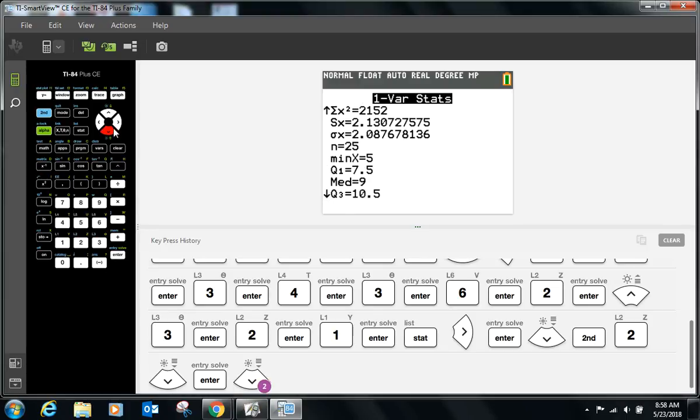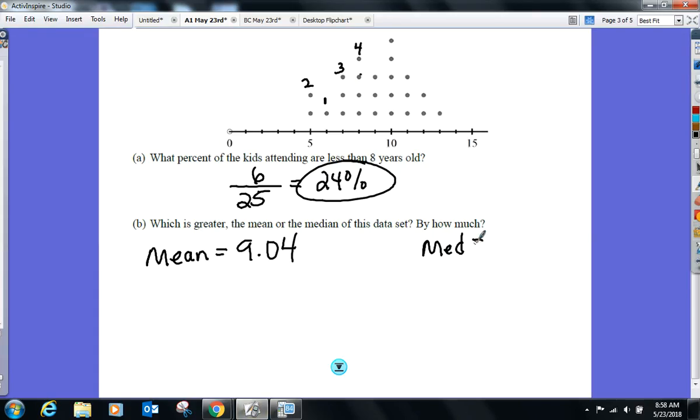Okay here we go. What's my mean? 9.04. And where's the median on here? Keep scrolling down, you'll find the median as nine. So which one's greater and by how much? Well the mean is greater by very slim margin but the mean is greater by 0.04. What? 0.04. That's fine. All right.